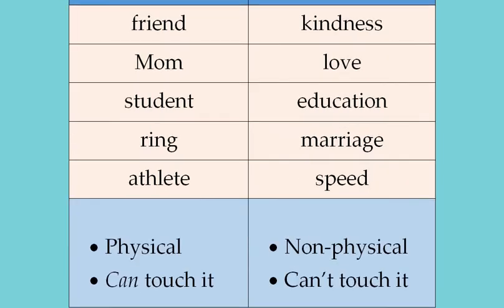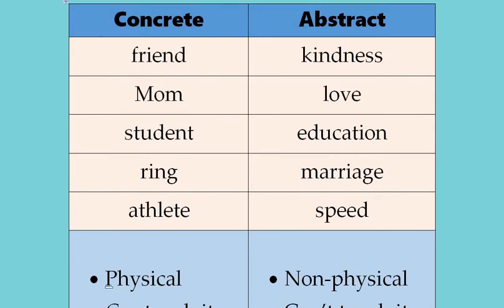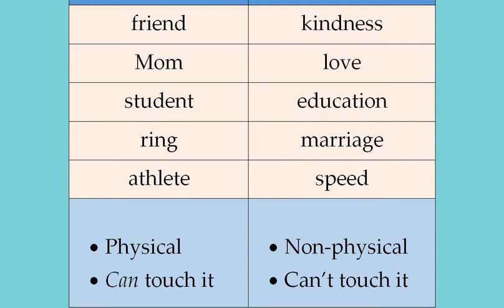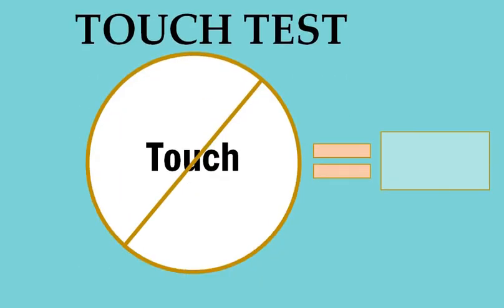Maybe you notice from this that all the concrete nouns are physical, and the abstract nouns are non-physical. In other words, you can touch the concrete nouns — if there's a friend, if there's a ring, that's something physically available right in front of you. But these abstract nouns you're not able to touch. You can't physically grab education; you can't physically grab speed. So to determine if a noun is concrete or abstract, I like to think about the touch test. If you are not able to touch something, it's going to be an abstract noun. That touch test can help us figure out if a noun is concrete or abstract.